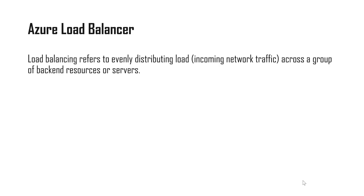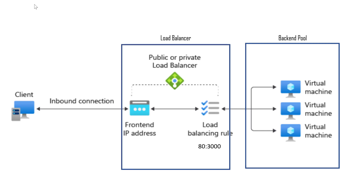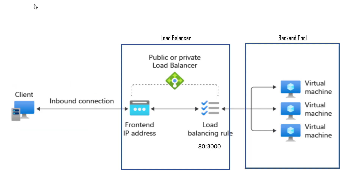Let's look at how the architecture of the Azure Load Balancer looks. There is a load balancer in the middle that accepts connections from the client and then forwards the request to the back end. The back end pool can consist of either virtual machines or a virtual machine scale set.